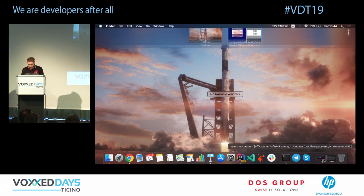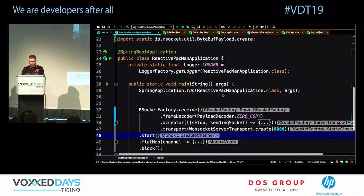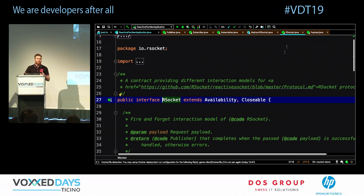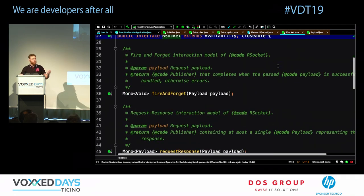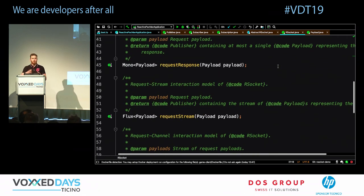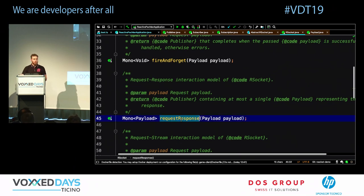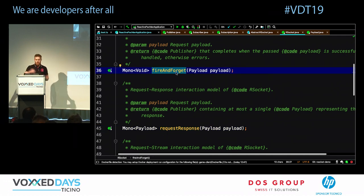RSocket is your communication API providing all communication patterns over a single connection. It supports request-response — the most common pattern — and also more advanced patterns. You can send a message and forget about it without waiting for a response — useful for sending logs, for example.